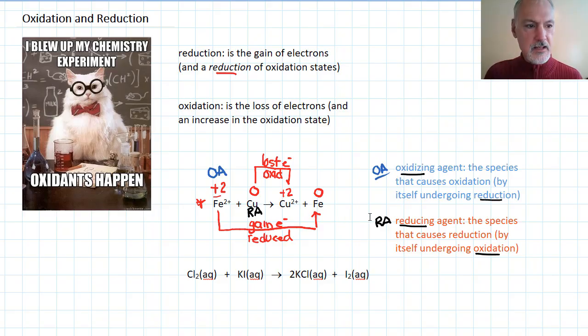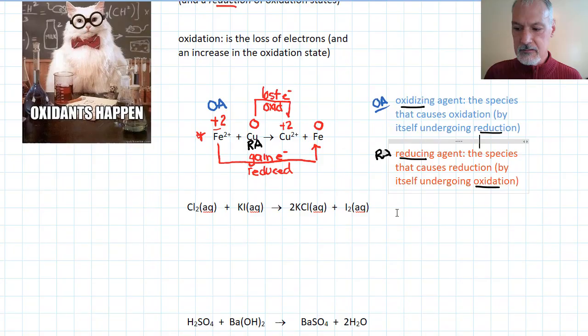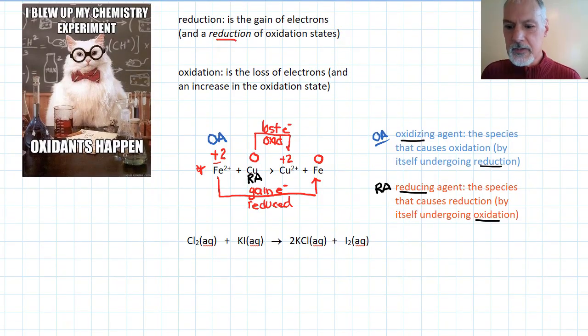Let's take a look at applying these terms to this next reaction. Again, we start by identifying the oxidation states of our species. Chlorine is zero. Potassium, being in the first family, I know it's plus 1. And iodine, being a halogen, is minus 1. Over on this side, potassium again is plus 1, and chlorine, minus 1, and iodine, zero.